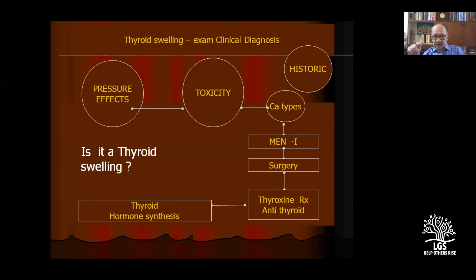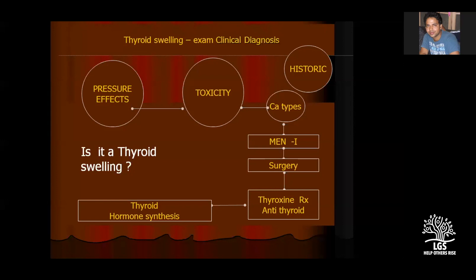Two important things we need to ask in the examination: pressure effects and toxicity. Pressure effects — because the thyroid is in the neck along with vital structures, it can produce compression on the trachea, veins, arteries, and esophagus. For toxicity, we need the pulse rate. There is an interesting thing about pulse rate estimation, particularly sleeping pulse rate in the examination.